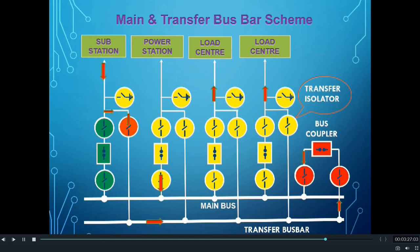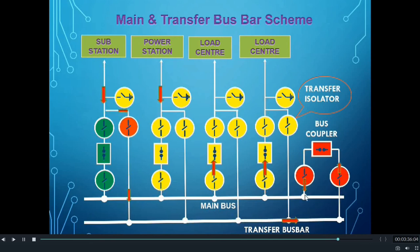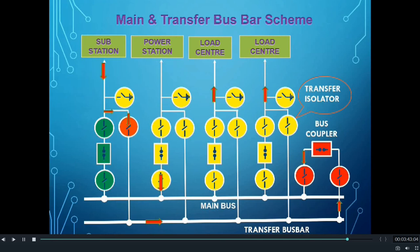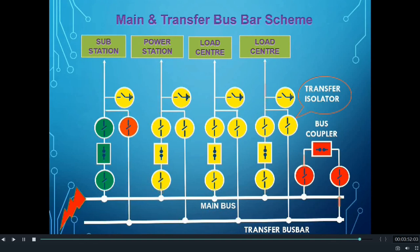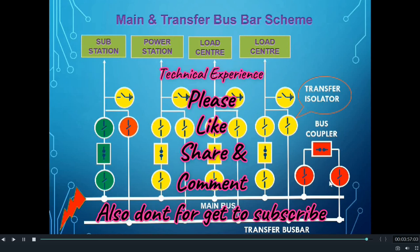So with this arrangement, we are basically connecting the feeder to the main busbar through the transfer busbar and the bus coupler. Hence, in this scheme, when the main circuit breaker of a feeder becomes faulty, the feeder can still be connected to the busbar with a short outage and work normally as before. However, the problem still lies with these busbar schemes in case of a busbar fault. In case of a busbar fault, all the feeders become out and we don't have the scope to overcome the problem.